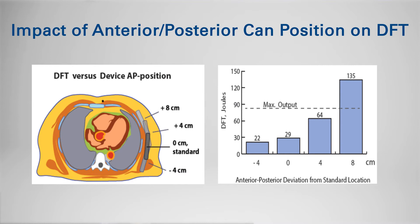One of the first things we examined was posterior versus anterior can position and its impact. The impact was actually substantial. When the can was placed in the recommended standard lateral position, the defibrillation threshold was quite good — slightly lower than 30 joules. Moving the can half a position, about four centimeters anterior, created a higher defibrillation threshold in the range of 65 joules, still within the range the device can easily deliver.